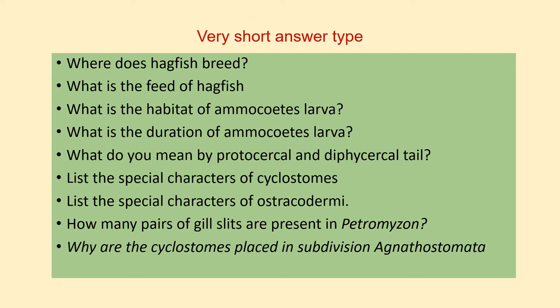What is the feed of hagfish? What is the habitat of Ammocoetes larva? What is the duration of Ammocoetes larva? What do you mean by protocercal and diphycercal tail? List the special characters of cyclostomes. List the special characters of Ostracodermi. How many pairs of gill slits are present in Petromyzon? Why are the cyclostomes placed in subdivision Agnathostomata?